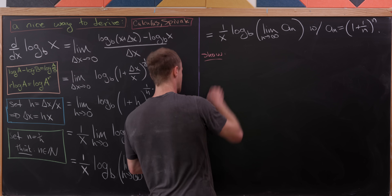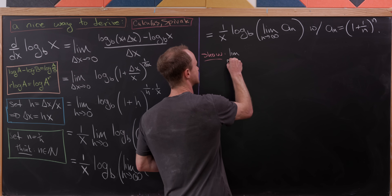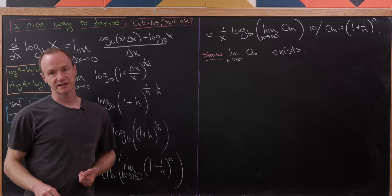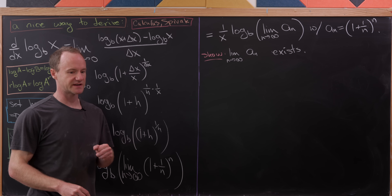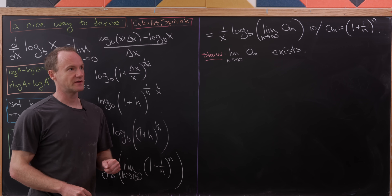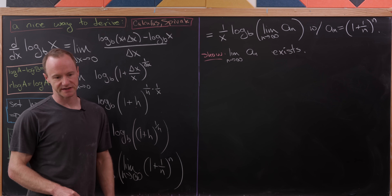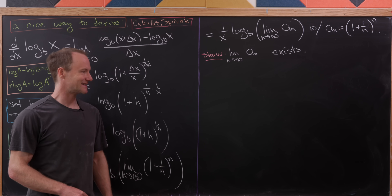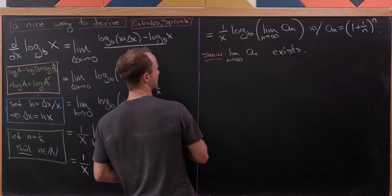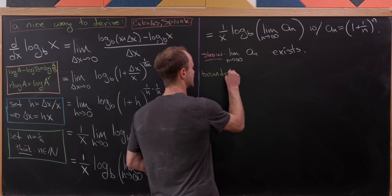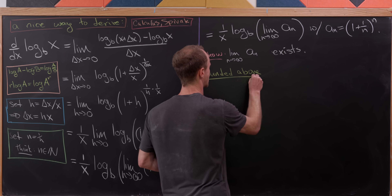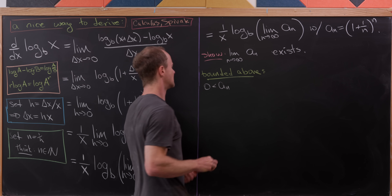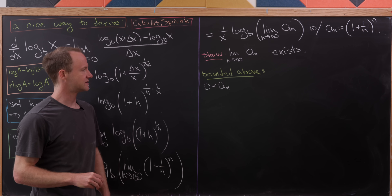We want to show that lim_{n→∞} a_n exists. We'll do that using the Monotone Convergence Theorem, which requires us to show the sequence is bounded and either increasing or decreasing. Specifically, we'll show it's bounded above, and then show it's increasing. Let's start by showing it's bounded above.